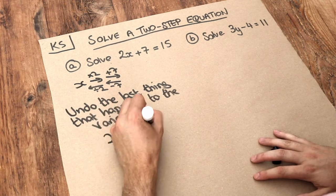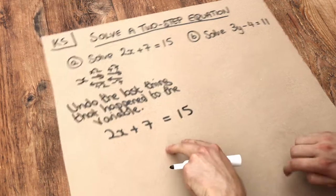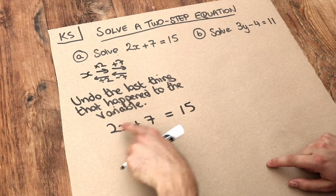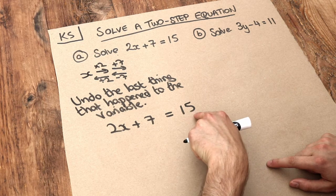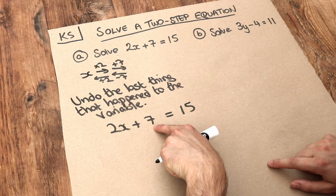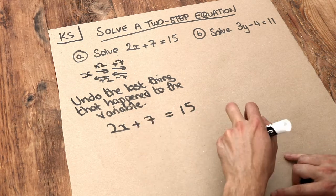If we copy that out again: we started with x, times by 2, then added 7 to it to get 15. So now we work backwards. We have to subtract 7 first to get rid of that plus 7.